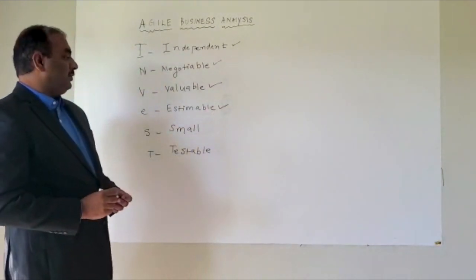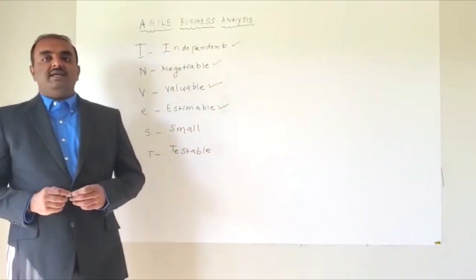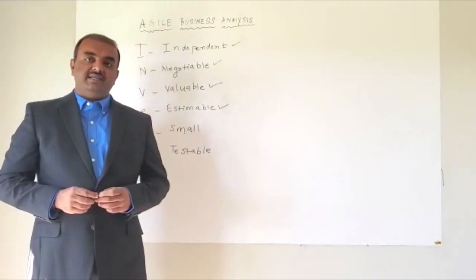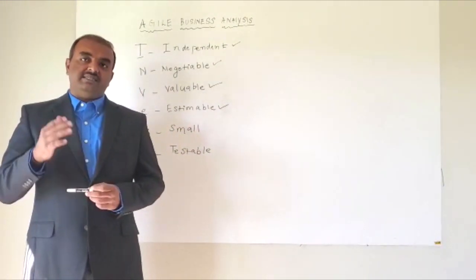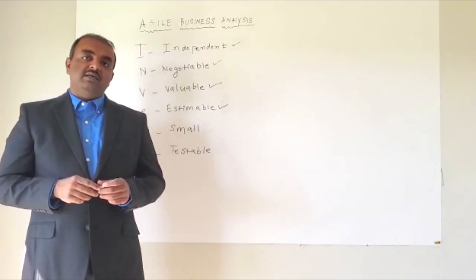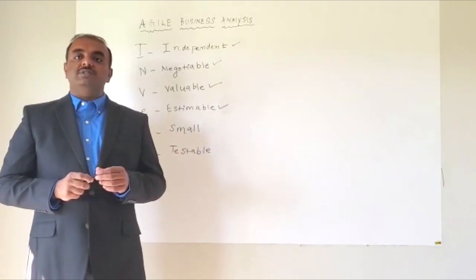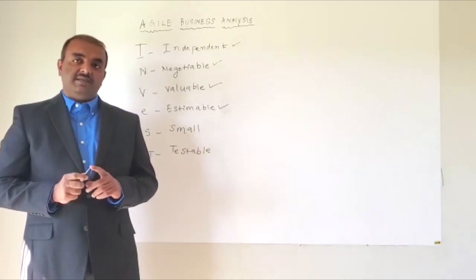The fifth attribute is Small. We all know that in Agile, the story should be completed. When I say completed, developed as well as tested within the same sprint. So considering that factor, every story should be small enough so that it can be done within the same sprint.